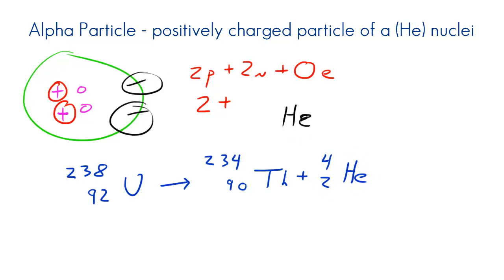Now this could break apart and undergo radioactivity and it would turn into 234-90 thorium and also 4-2 helium. And this thing right here, this helium, this would be the alpha particle. Again, as soon as it starts breaking apart, it would have two protons, two neutrons, and zero electrons.